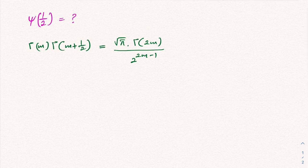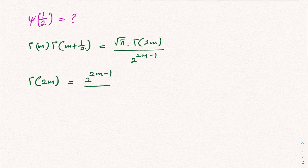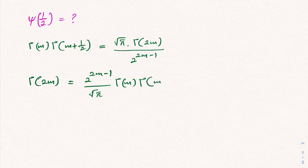As a next step, I am going to isolate gamma of 2m. So we have gamma of 2m is equal to 2 raised to the 2m minus 1, over the square root of pi, times gamma of m times gamma of m plus one half.